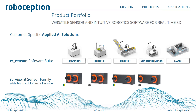Our product portfolio is listed on this slide. At the bottom you can see the RC Wizard, which is our hardware stereo-based sensor that comes with a standard software package. In the middle you can see our RC Reason software suite, which includes SLAM, tag detect, item pick, box pick, and silhouette match. All our products come with an easy-to-use web GUI so you can configure and use them without being an expert in the field of vision.